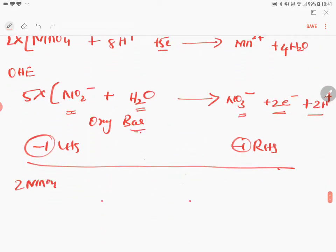2 MnO4 minus plus 16 H plus, electrons are cancelled, plus 5 NO2 plus 5 H2O, giving you